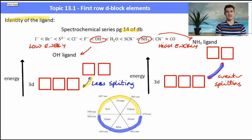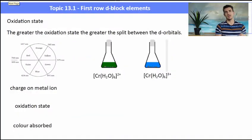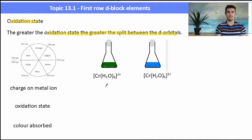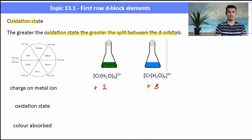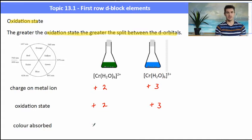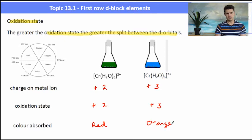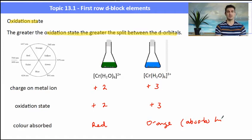For the third factor — oxidation state — generally the greater the oxidation state, the greater the split between those d-orbitals. Here we have two chromium complexes: the green one has the metal ion at plus 2, and the blue one has it at plus 3. Because they both have water ligands, the oxidation states are plus 2 and plus 3 respectively. The green compound absorbs in the red region of the spectrum, while the blue compound absorbs in the orange region. From this we can see the blue compound absorbs higher energy light, meaning it must have a greater d-orbital splitting corresponding to its higher oxidation state.